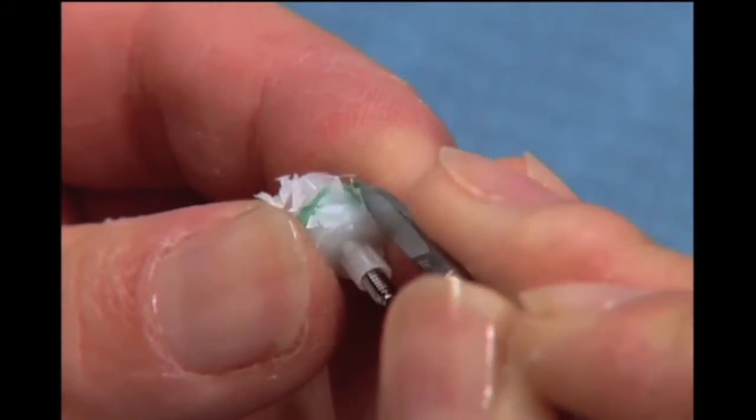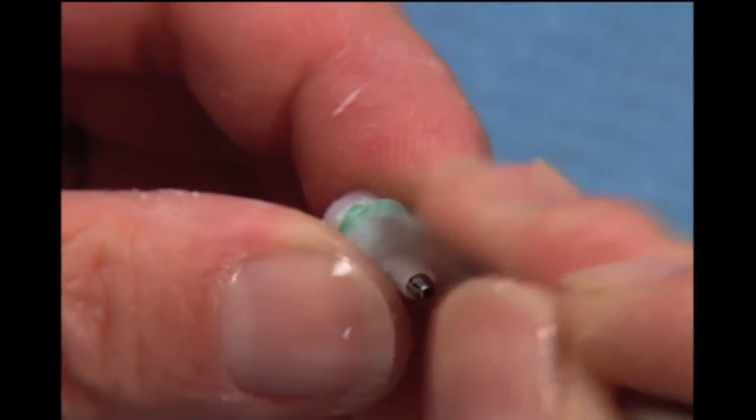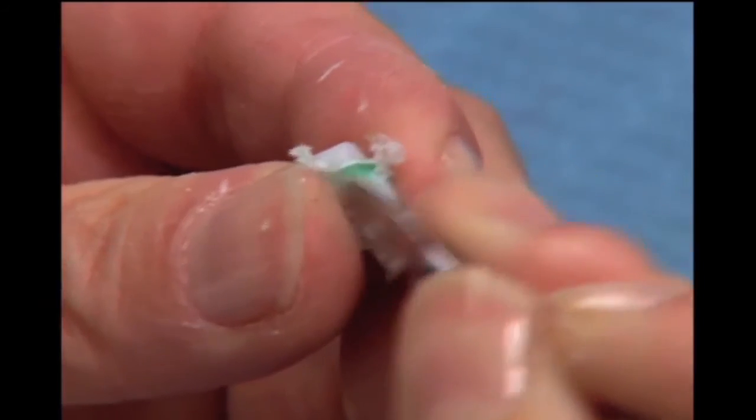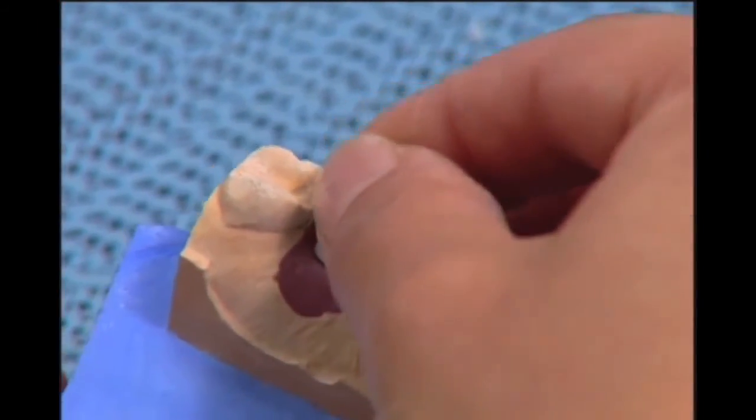Next, use the instrument of your choice to shape the wax as required. When you are satisfied with the wax shape of the base of the abutment, try it back on the soft tissue model.